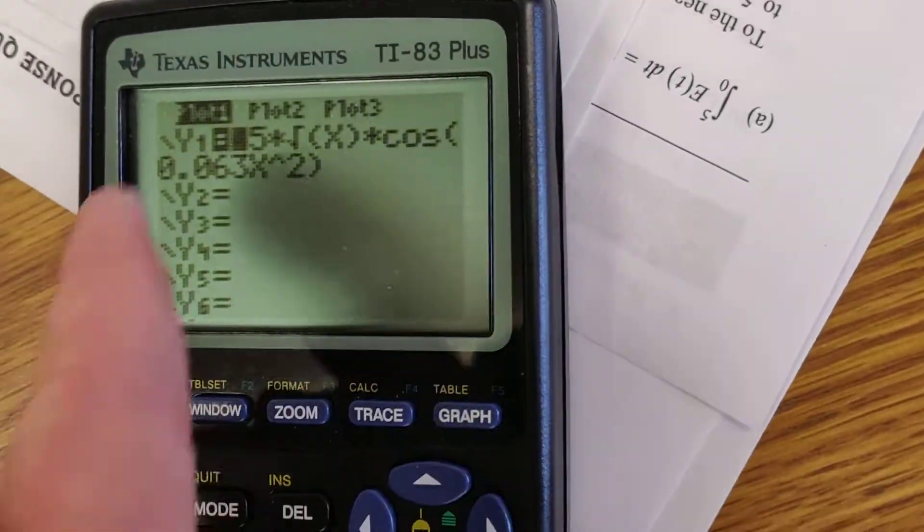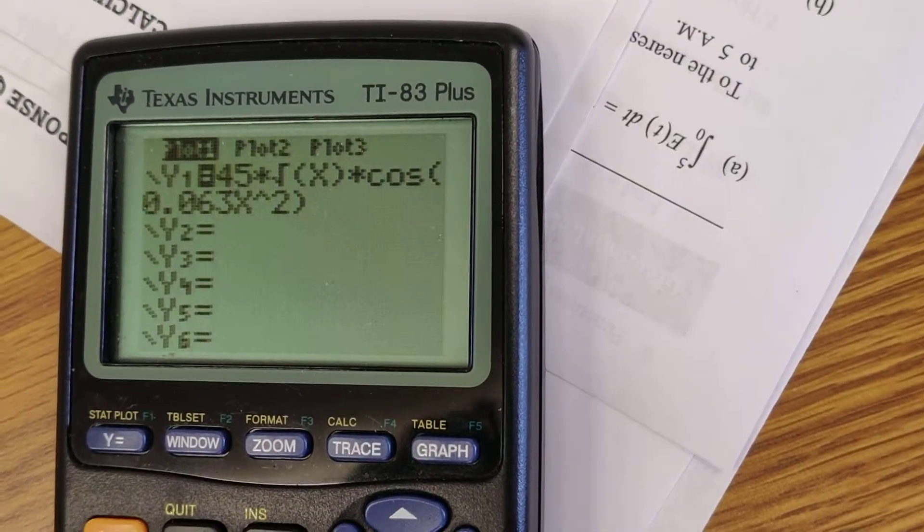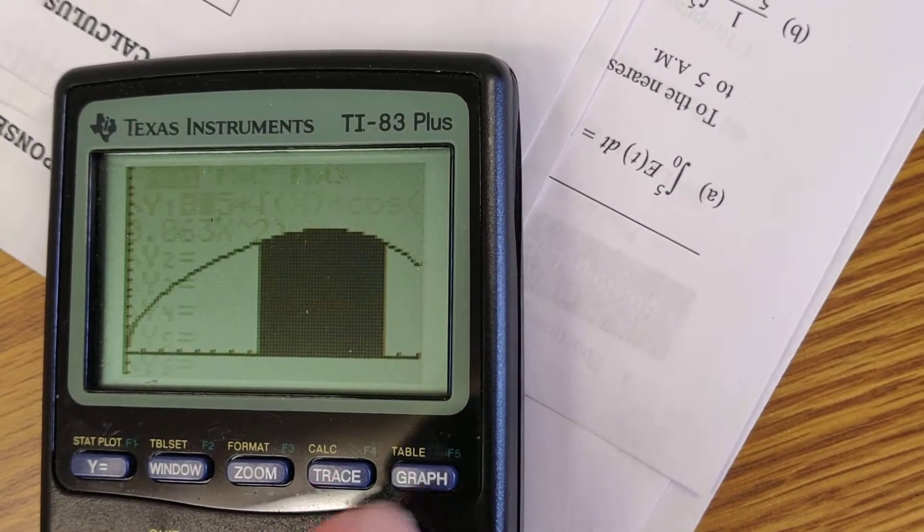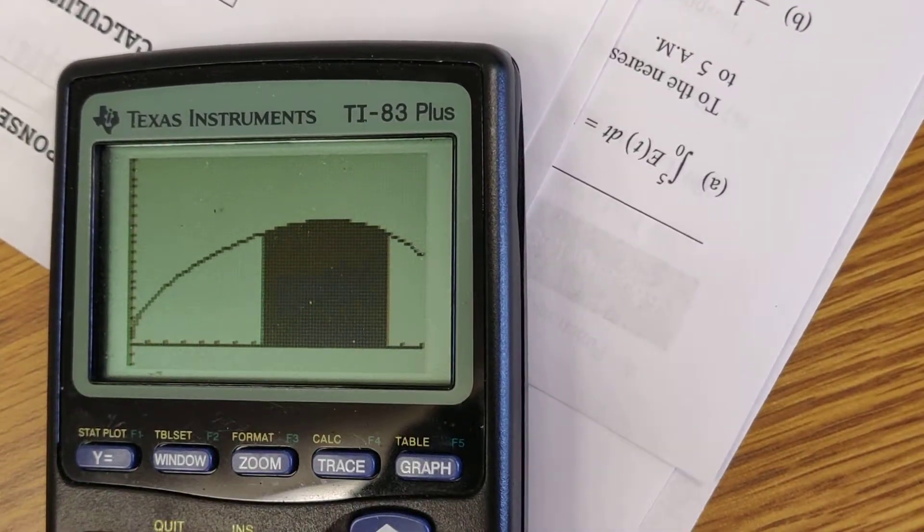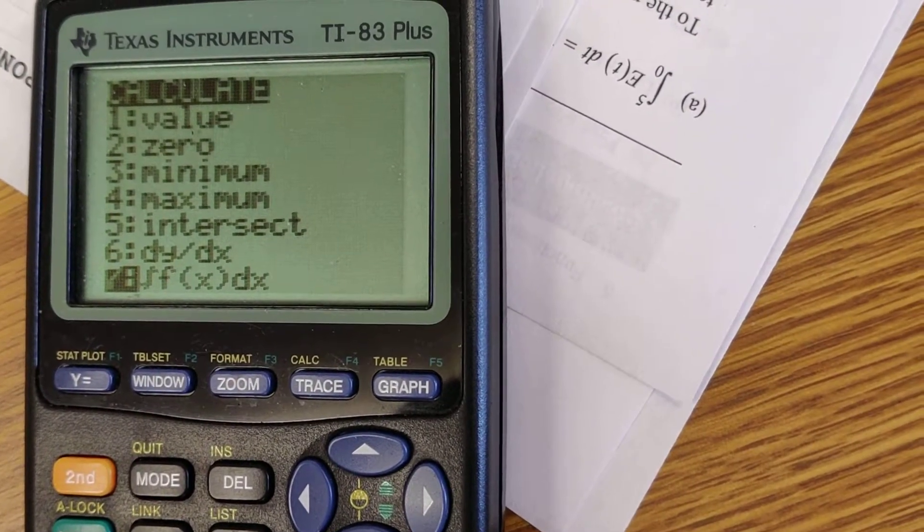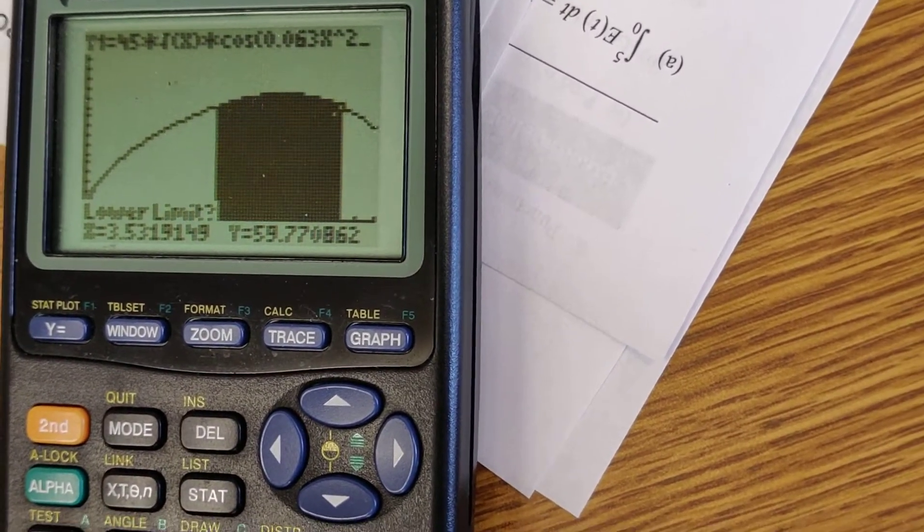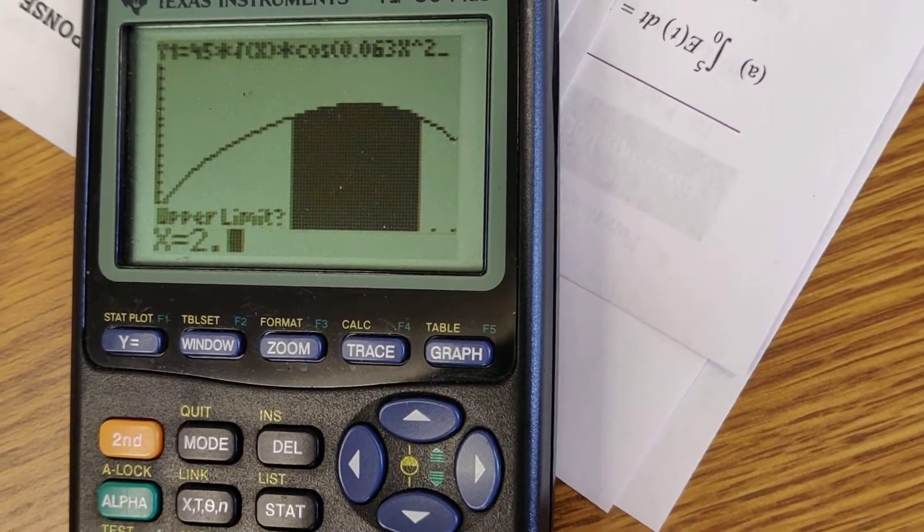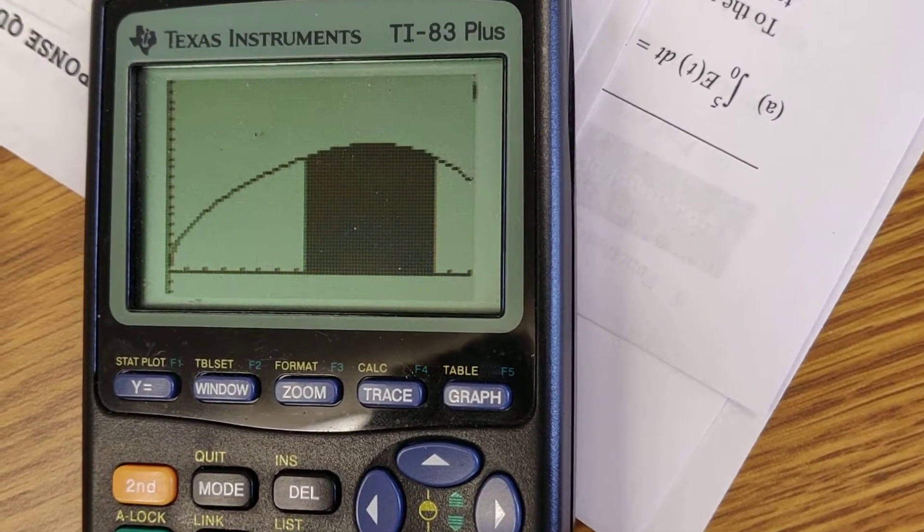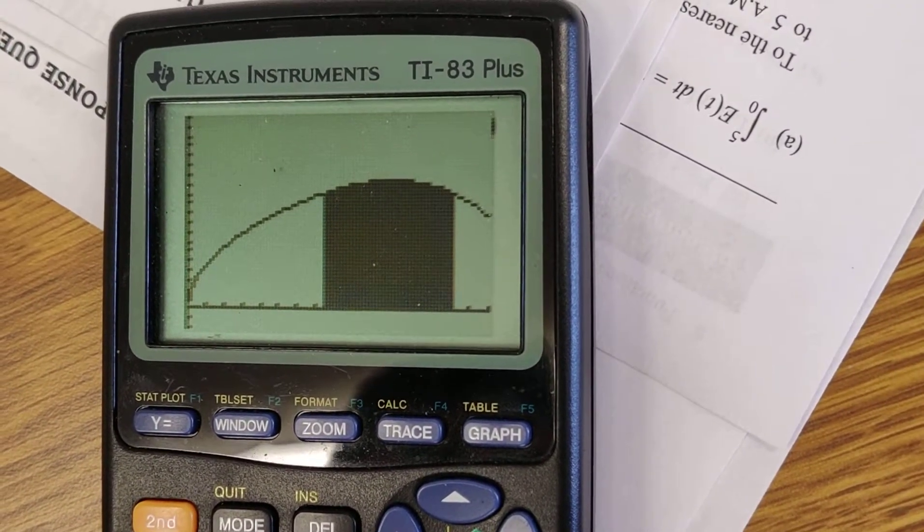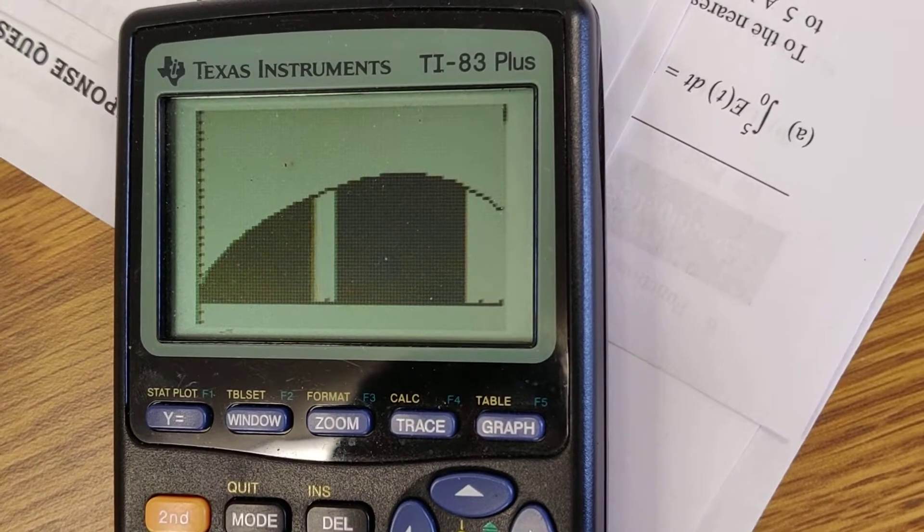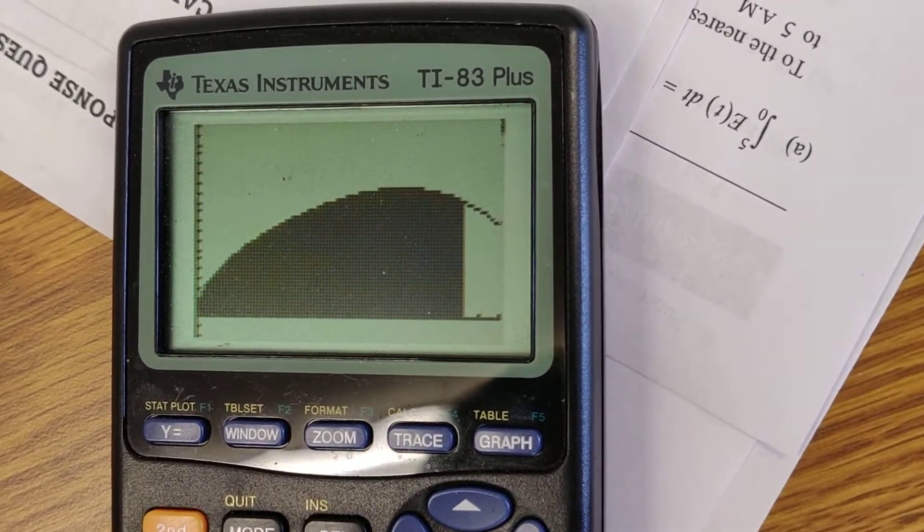Everything is already set up. You can see this is the equation for the velocity of particle Q. We press graph. We found this area for part C, we don't want it. We want a different area. So second, calculate, the antiderivative symbol. The lower limit in this case is 0. The upper limit in this case is 2.8. Very sad, I do apologize guys.